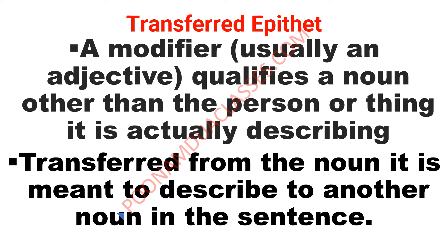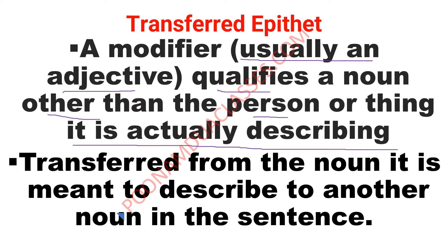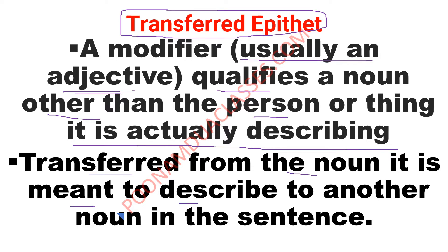Let us understand the definition first. A transferred epithet is one in which a modifier — what we call an adjective in simple language — qualifies a noun other than the person or thing it is actually describing. The epithet, which is the adjective, is transferred from the noun it is meant to describe to another noun in the same sentence.